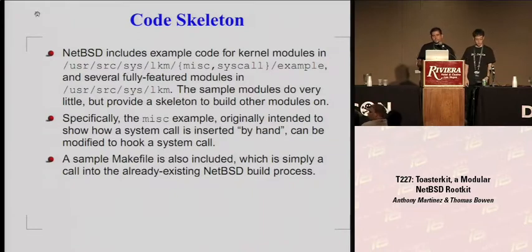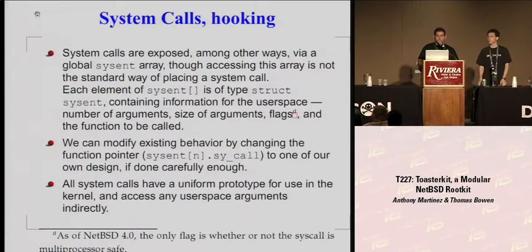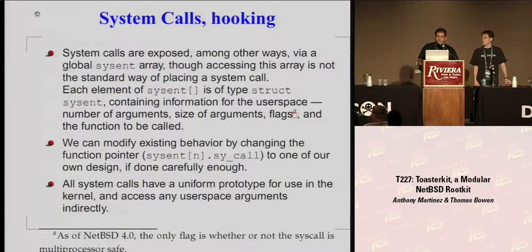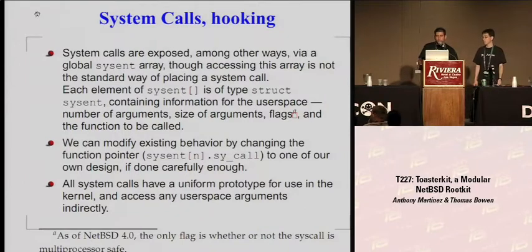System call hooks work as follows: there's a master table inside kernel space called sysent — the sysent array. That table maps system call numbers to the system call functions in kernel space. To create a system call hook, all you do is go through that table, find the number you want to modify, change the function pointer in there, and you have a system call hook. It's very, very easy.